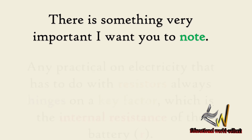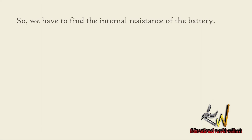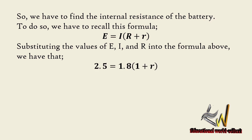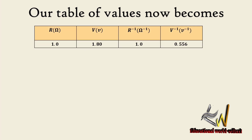Any practical on electricity involving resistors always hinges on a key factor: the internal resistance of the battery. We find the internal resistance using E = I(R + r). Substituting the values — 2.5 = 1.8(1 + r) — and simplifying, the internal resistance r = 0.39 ohms. Our first table entry: R = 1 ohm, V = 1.8 volts, 1/R = 1 per ohm, 1/V = 0.55 per volt.